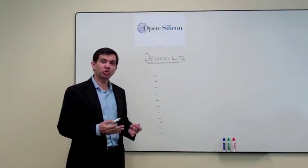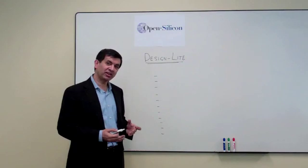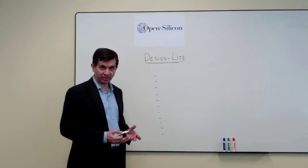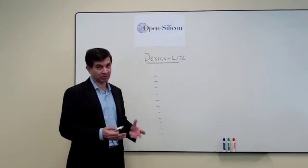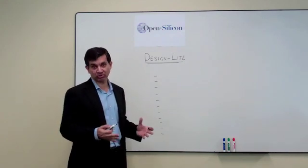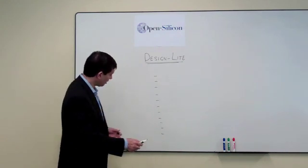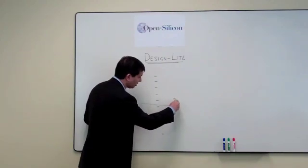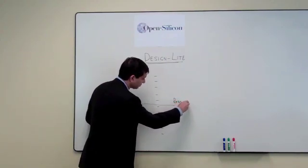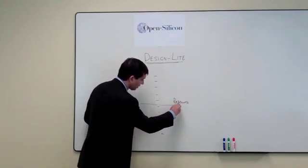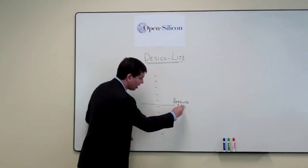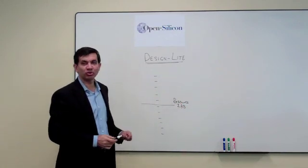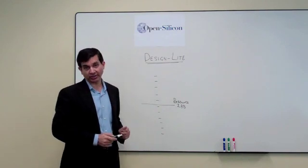Typically two lines are drawn. One is known as the resource ZBB line — resource zero base budget — meaning the line where you run out of resources. So let's say we draw the line right here. This is your resource ZBB line, which means we have enough resources to do these five projects.